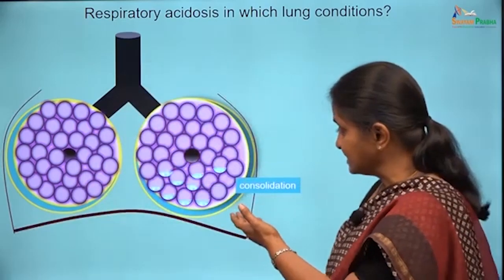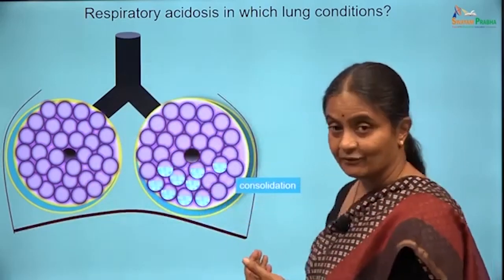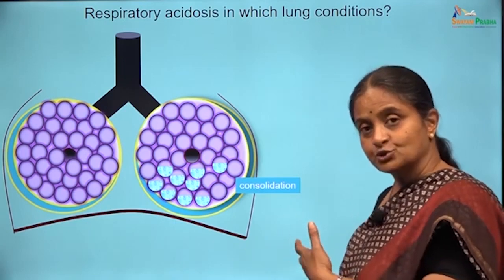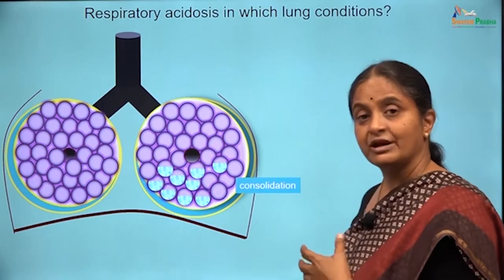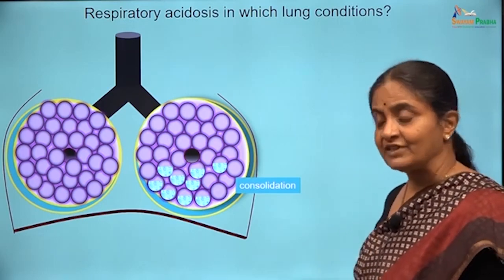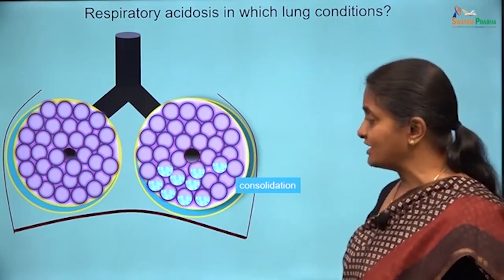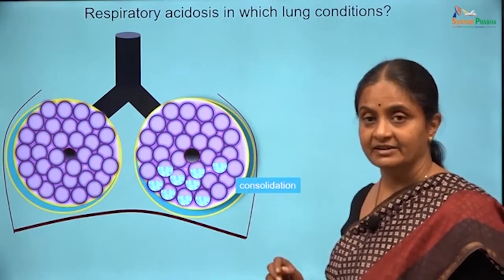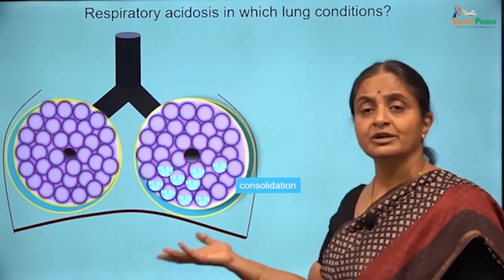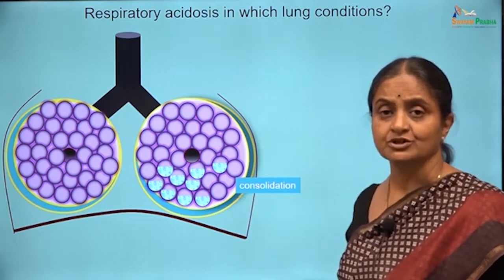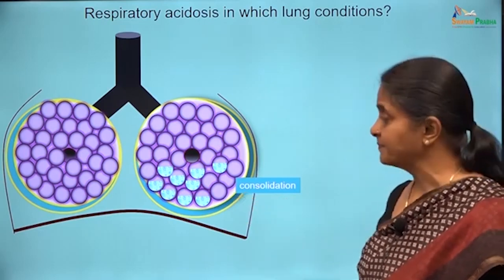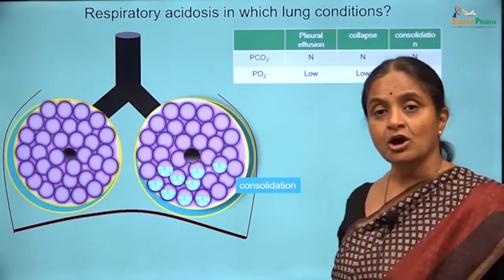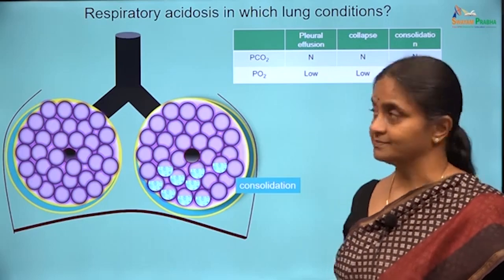We have seen the case where there is fluid in the alveoli — referred to as alveolar edema if due to cardiac failure, a non-infective etiology. If there is an infective etiology, this is referred to as pneumonic consolidation in acute bacterial infections, or tuberculosis consolidation in a chronic disease state. In consolidation again, there need not be a respiratory acidosis.